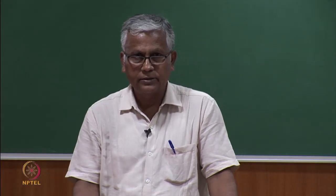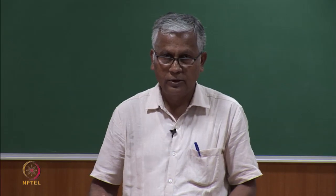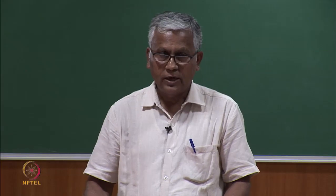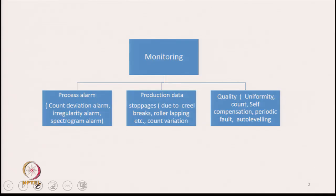What are the different monitoring techniques that we have? What exactly do we monitor? There are process alarms, and there are production data capturing systems — that is, we capture production-related data using suitable sensors. The machine will also check the quality of the product it is making, which is the sliver. So, these three types of information we get from the monitoring systems: alarms when something goes wrong, production data, and quality of the sliver.